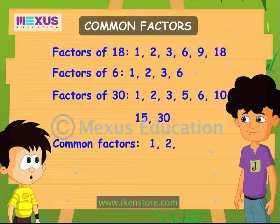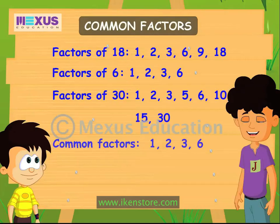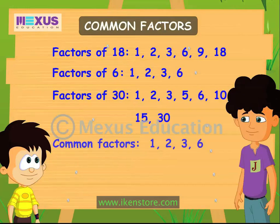So 1, 2, 3, and 6 are the common factors of 18, 6, and 30. This means that 1, 2, 3, and 6 can divide 18, 6, and 30 completely so that there's no remainder left. This tells us if we cut planks of either 1 foot, 2 feet, 3 feet, or 6 feet from all three logs of wood, then no wood will be left over.